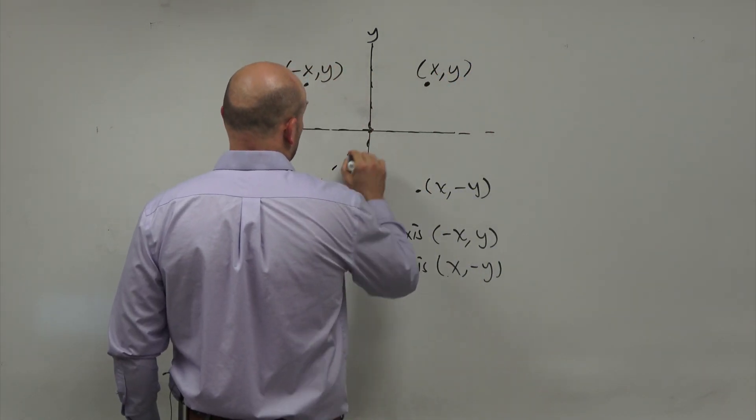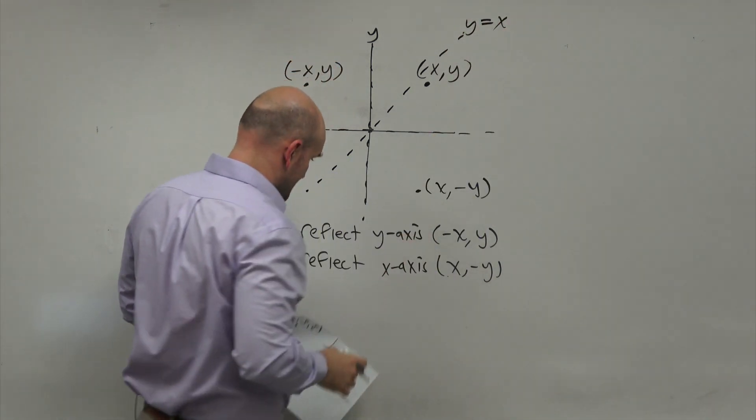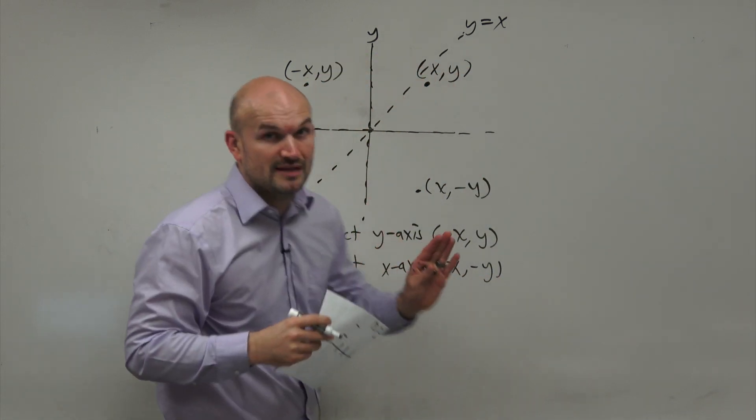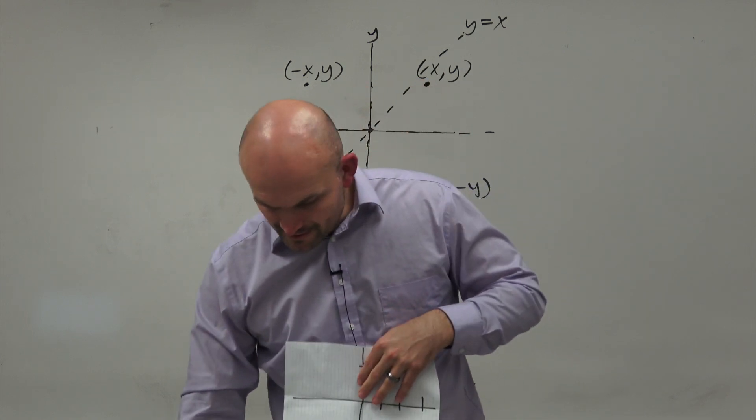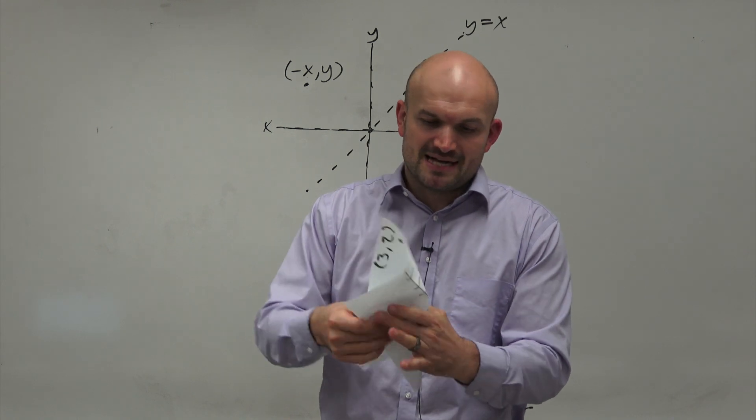would be like one of our more famous ones, the Y equals X line. Now, the Y equals X line is basically, for every value of X, is going to equal Y. And so on this one, it's going to be a little bit trickier, but we're going to try to do a diagonal as best as possible. So we're going to try to cut this off, cut this 90 degrees as best as possible here.